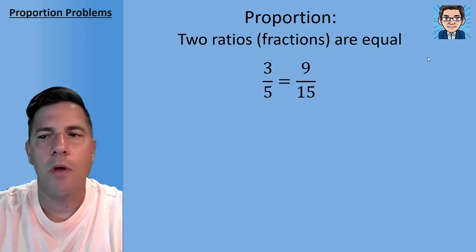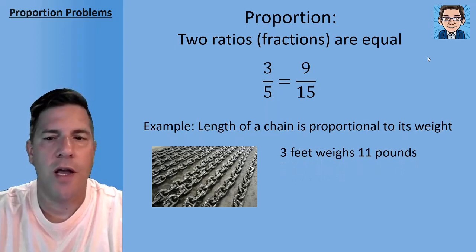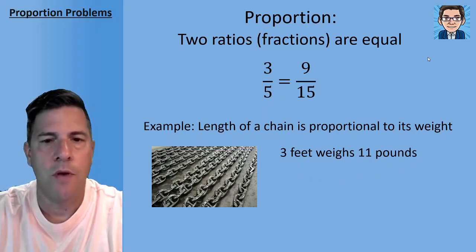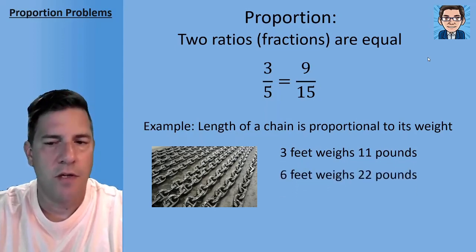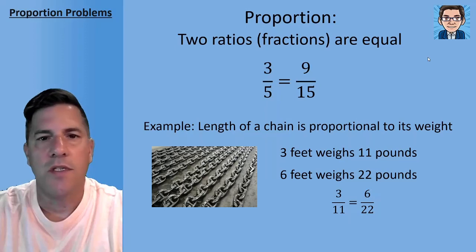So what's an example of a proportion? Well, if we have a length of chain, we've got this big heavy chain, it's going to be proportional to its weight. So if we had three feet of the chain, it might weigh 11 pounds. So if we had six feet of the chain, then it would weigh 22 pounds. And if you see that proportion, 3/11 equals 6/22.